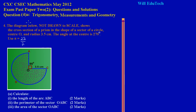In this lesson we are going to be looking at the solution to question 4a, a typical trigonometry measurements and geometry question on the May 2012 CSEC math exam. Here we have the diagram below, not drawn to scale, showing the cross section of a prism in the shape of a sector of a circle, center O and radius 3.5 centimeters. The angle at the center is 270 degrees.